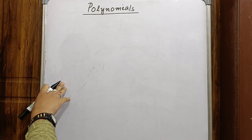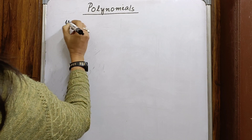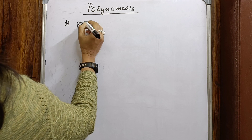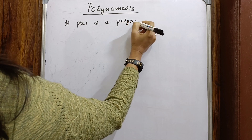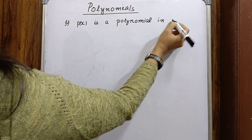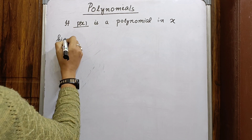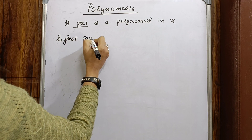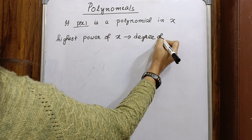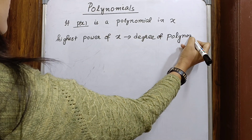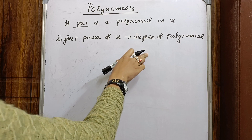Before moving to Exercise 2.1, let me give you a brief revision of what polynomials is. If p(x) is a polynomial in x, then the highest power of x is called the degree of the polynomial.